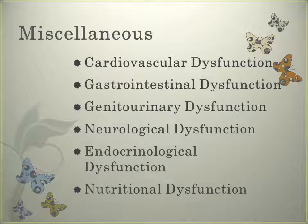Genitourinary dysfunction could include hypospadias, where the opening of the urethra is on the ventral surface of the penis. Or minimal change nephrotic syndrome — episodes often happen with bacterial or viral infections and could cause weight gain and edema, decreased output, hypoalbuminemia, and ascites. Treat it with dietary restrictions, fluid restrictions, corticosteroids, and possibly immunosuppressive therapy.